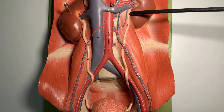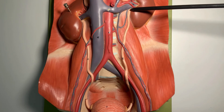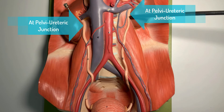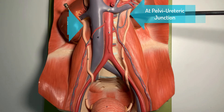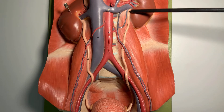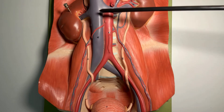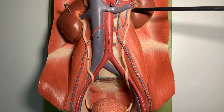The first constriction point commences where the ureter begins — that is where the pelvis becomes the ureter. That is called the pelvi-ureteric junction, or PUJ, or UPJ. This is the first constriction and it is present on both sides. In simple words, where the ureter begins is the first constriction site.